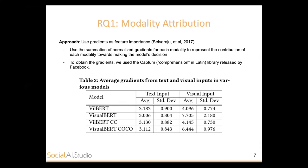For our first research question regarding modality attribution — what is the contribution of each modality — our approach is to use gradients as a form of feature importance. This has been used largely in the explainable AI field for deep learning. We take the summation of the normalized gradients for each modality to represent its contribution, using the Captum library. We observe that the visual modality actually contributes more in the hateful memes classification. This could be because images tend to be noisier and have slightly higher dimensionality, but it begs further investigation.